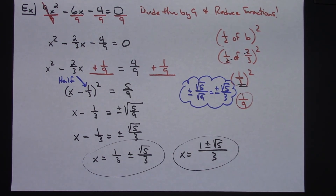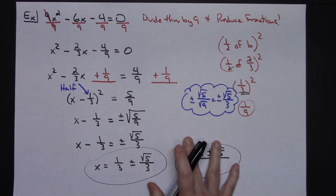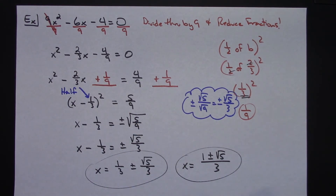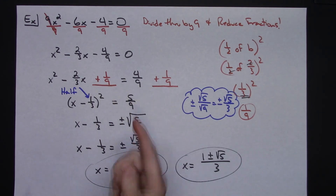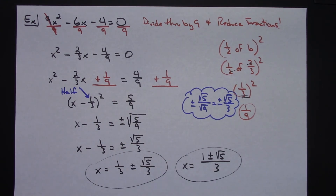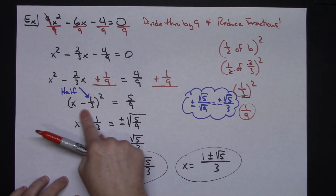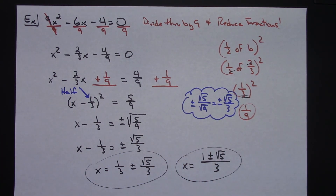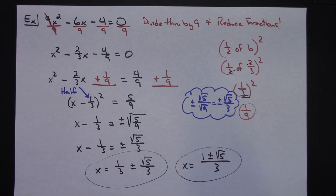Either form of that answer would work. That's a second example of completing the square with a leading coefficient that's not 1. Yes, you can end up with fractions, but completing the square to form a perfect square trinomial lets you factor down to a quantity squared every time, making the rest of the solving process really simple. Thanks for watching — I hope this cleared up the completing the square method for solving a quadratic. Give me a thumbs up and share with your friends!